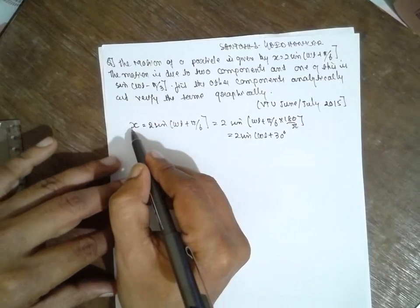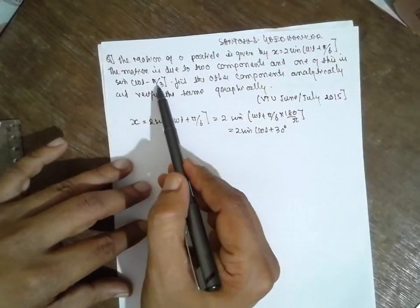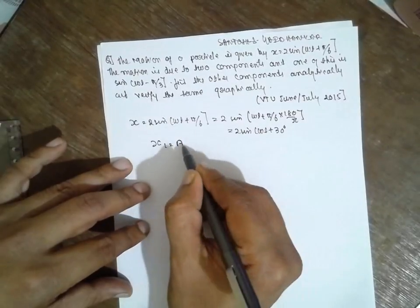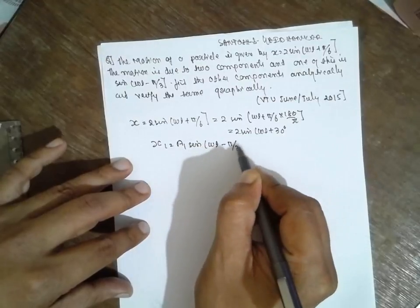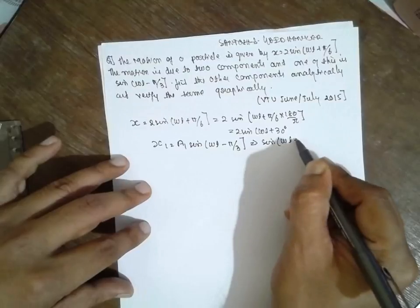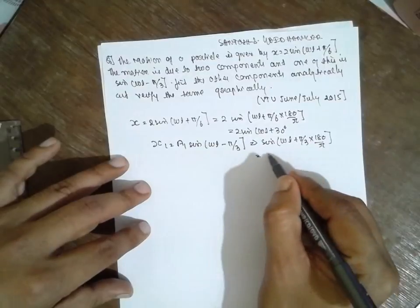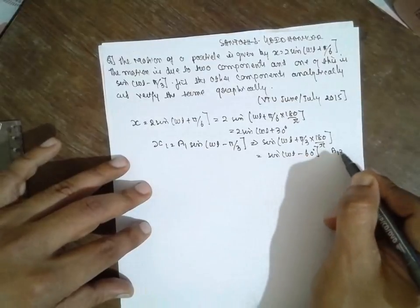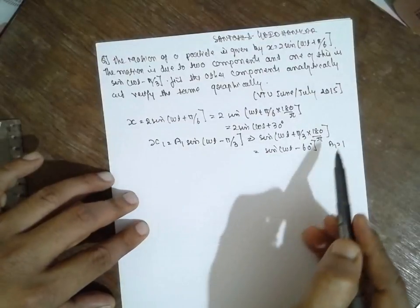They have given the resultant here, and one more component: sin(ωt + π/2). That means x1 is nothing but a1 sin(ωt - π/3). Converting to degrees: sin(ωt - π/3) × 180/π gives sin(ωt - 60°), where a1 is equal to 1.